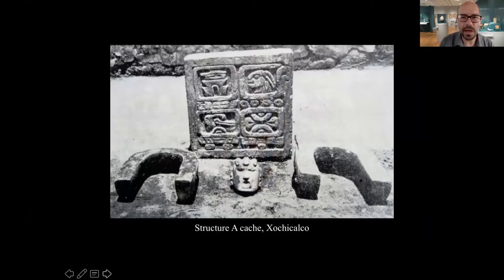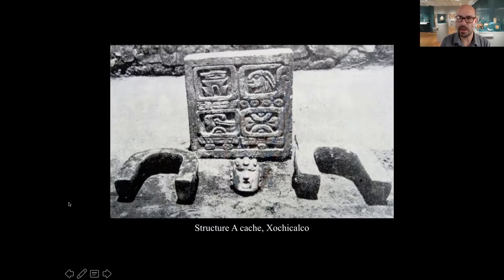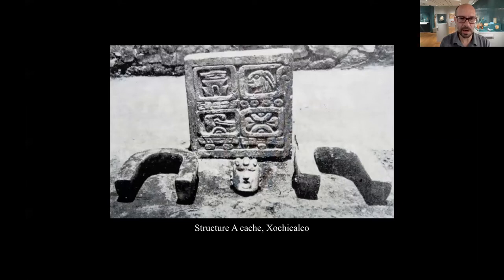Yokes, achas, and palmas occasionally turn up as dedicatory offerings as people dig into the lower depths of structures, or sometimes in burials. This is an offering found in the city of Chichalco in the state of Morelos, about an hour south of Mexico City, where they found two plain, uncarved yokes and a full-round acha along with a panel containing glyphs that we're not able to read. And I think the ball bounces back to Angel at this point.